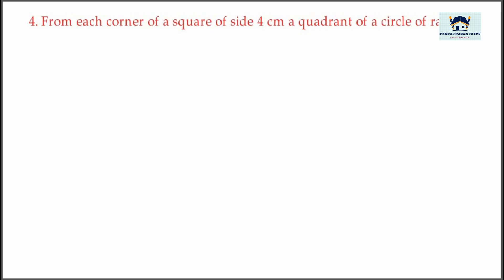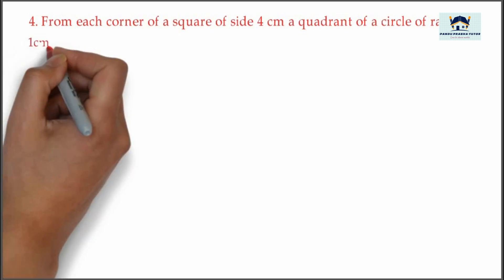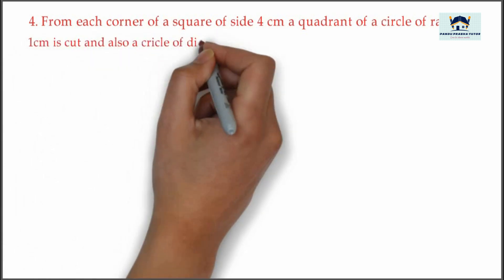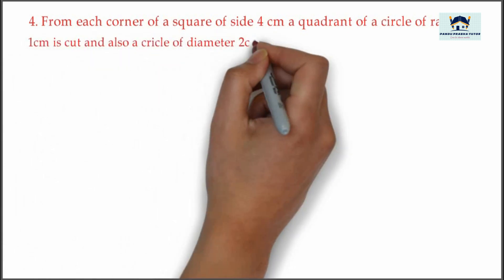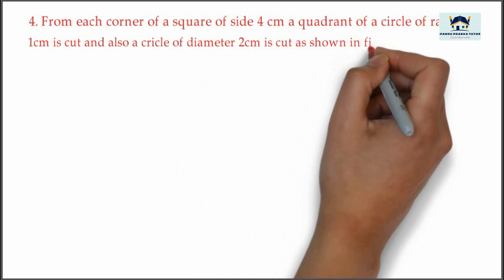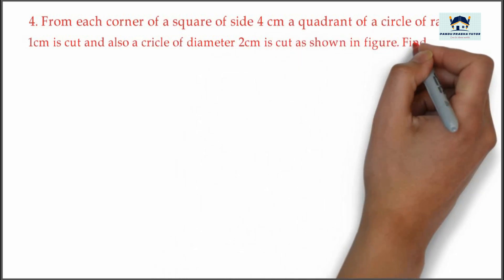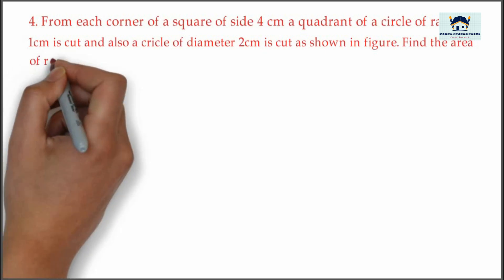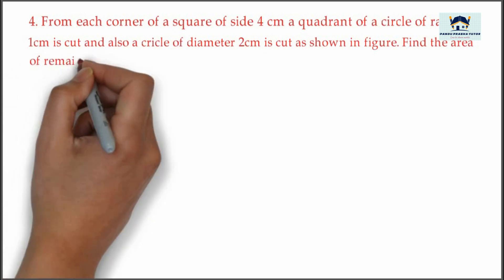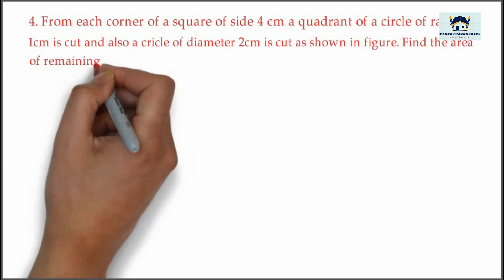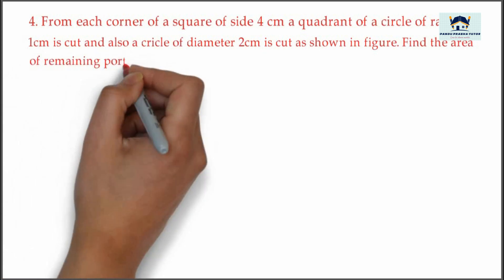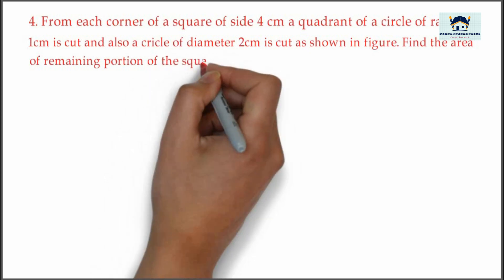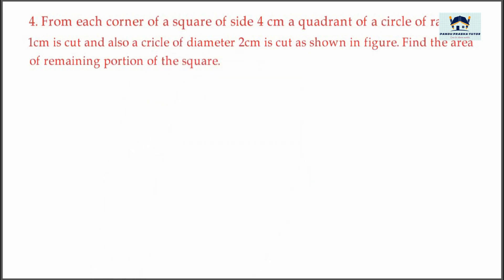Next, take another problem. From each corner of a square of side 4 centimeter, a quadrant of a circle of radius 1 centimeter is cut, and also a circle of diameter 2 centimeter is cut as shown in the figure. Find the area of the remaining portion of the square.